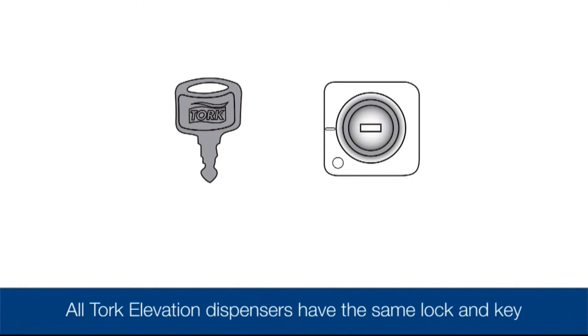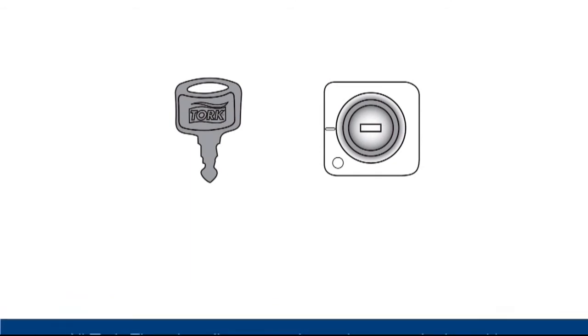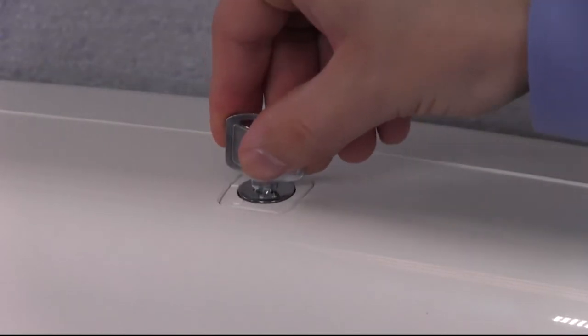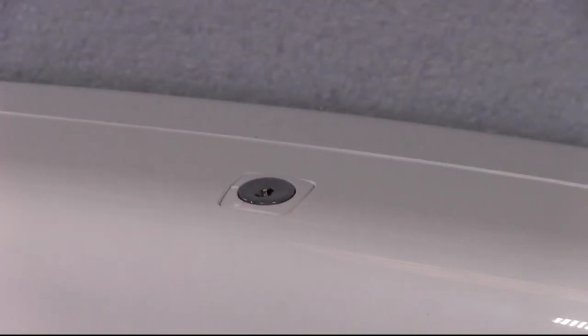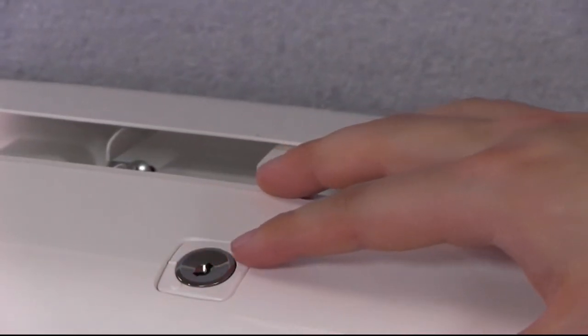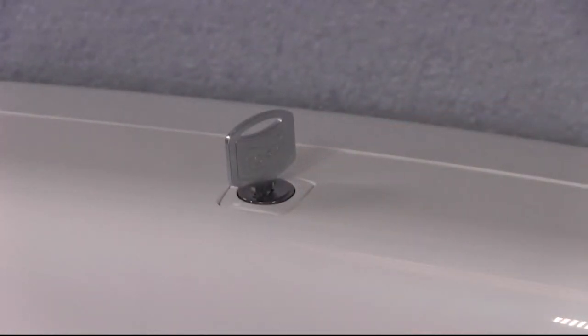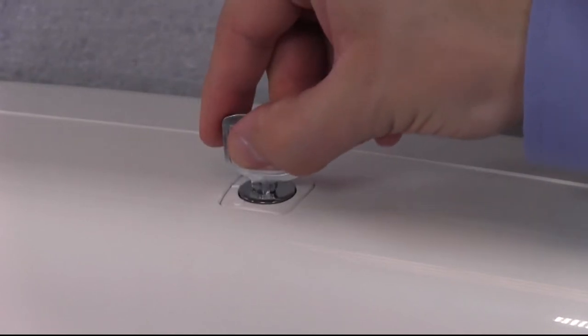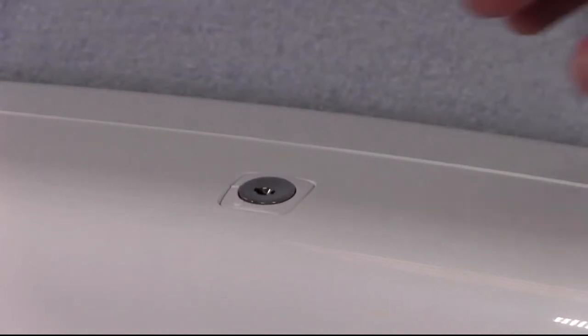All of the Torque Elevation dispensers have the same lock and key. The locks can be set in key lock or push button mode. When the key is inserted and aligned with the circle, the dispenser is unlocked and can be opened just by pushing on the button. When the key is inserted and aligned with the dash, the dispenser is locked and you'll need the key to open the dispenser.